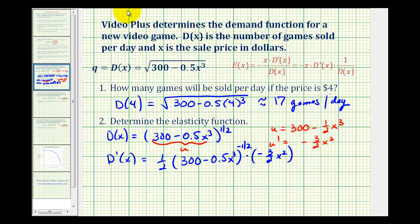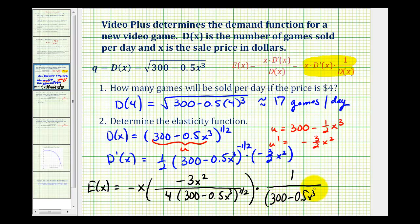to the negative 1 half times u prime negative 3 halves x squared. So notice how we have some fractions here. And that's why to determine the elasticity function, we'll use this form of the formula here. So the elasticity function is going to be equal to negative x times the derivative of the demand function, which is here, which would be negative 3 x squared, all over 2 times 2, that's 4. And this quantity would be to the positive 1 half power in the denominator. times the reciprocal of the demand function, which would be 1 all over the quantity 300 minus 0.5 x cubed to the positive 1 half power. So let's determine this product on the next slide.